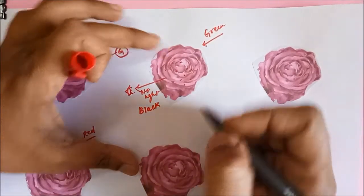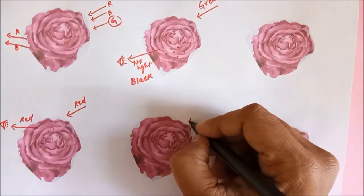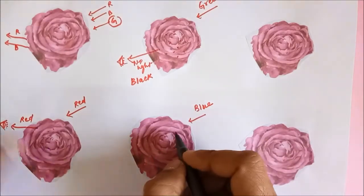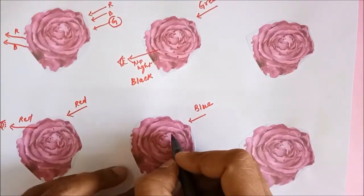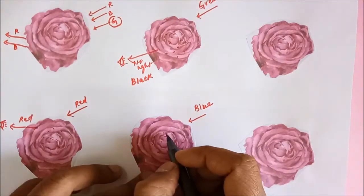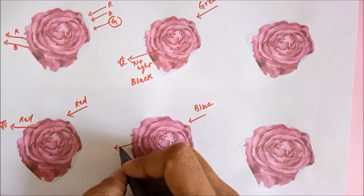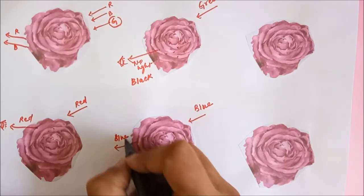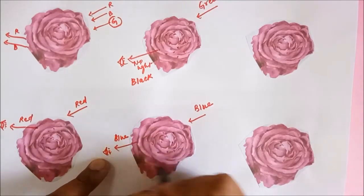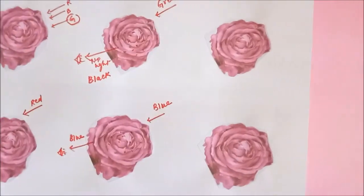Let's impart blue light on it. Blue also does not get absorbed — the pigments are only capable of absorbing green light — so blue gets reflected totally. It reaches our eye, and so we perceive this rose as blue in blue light.